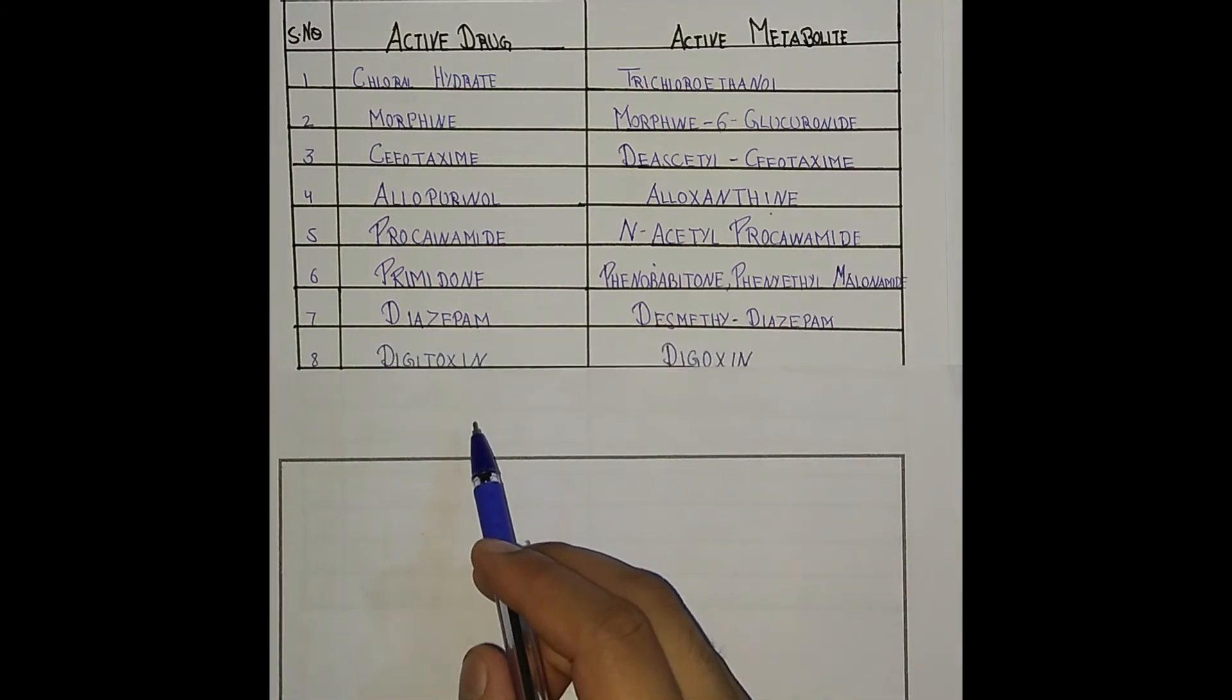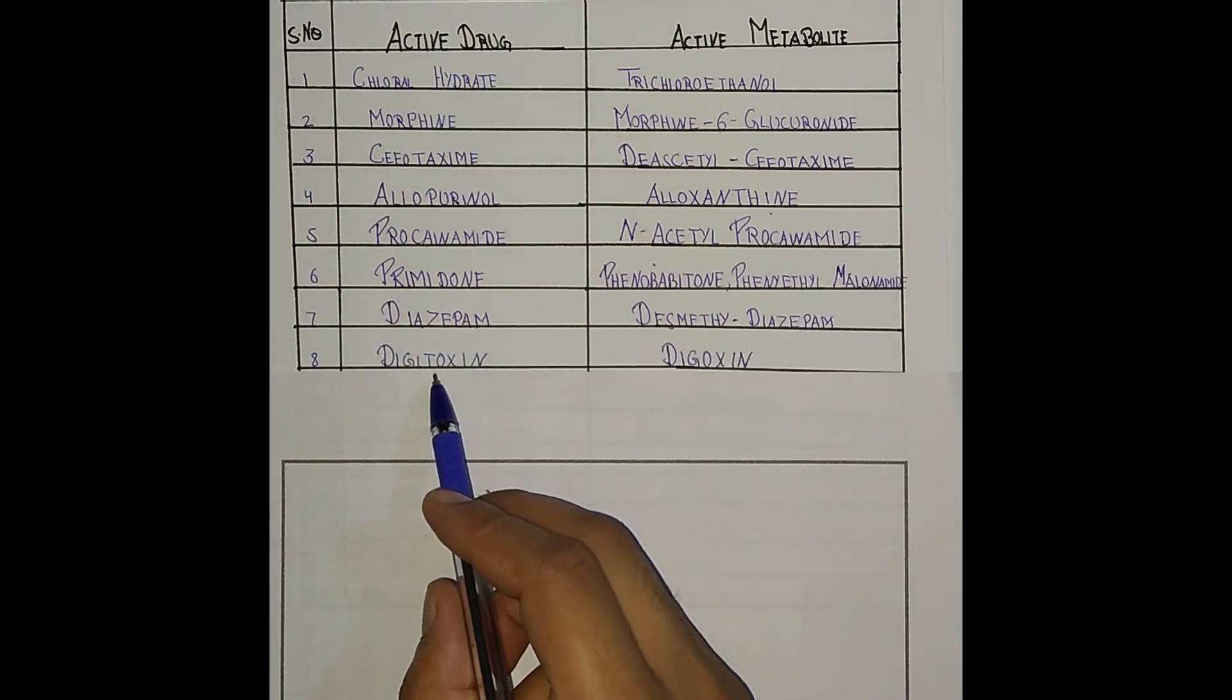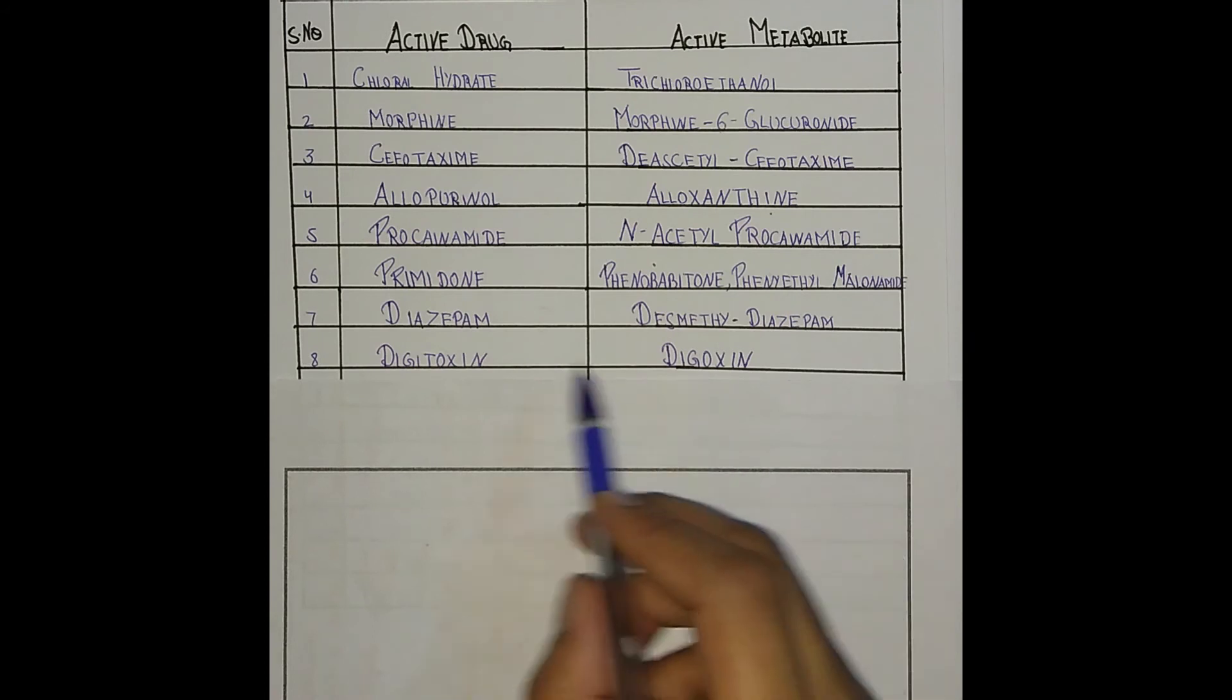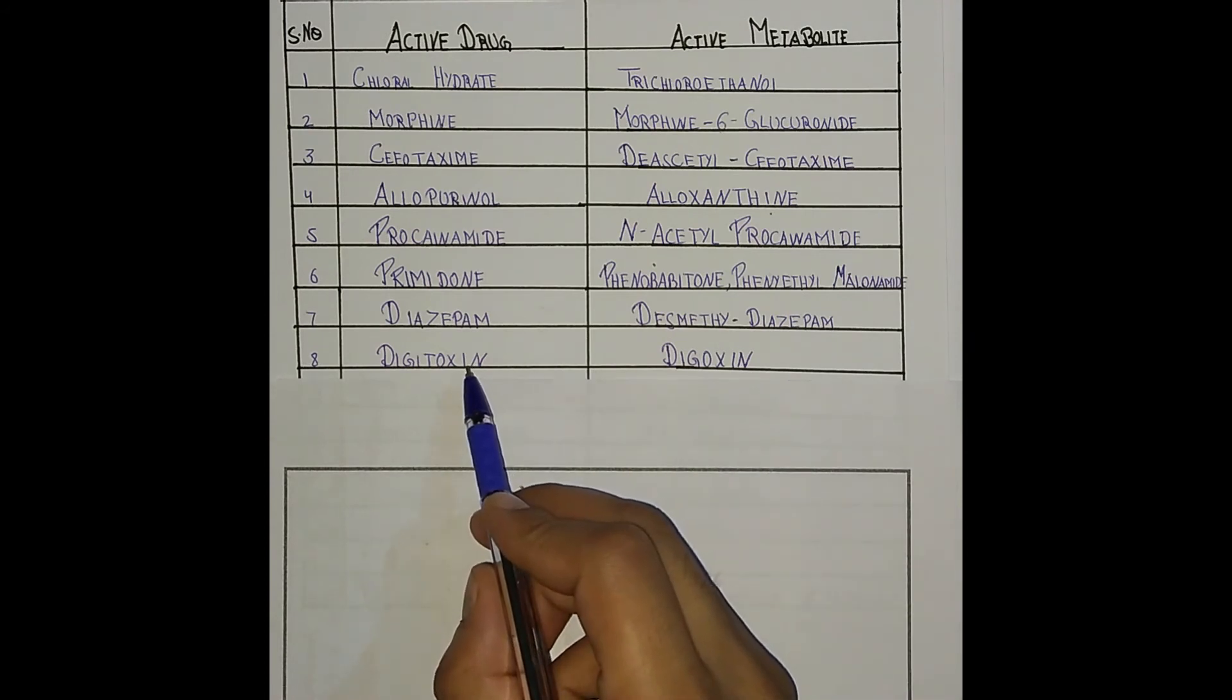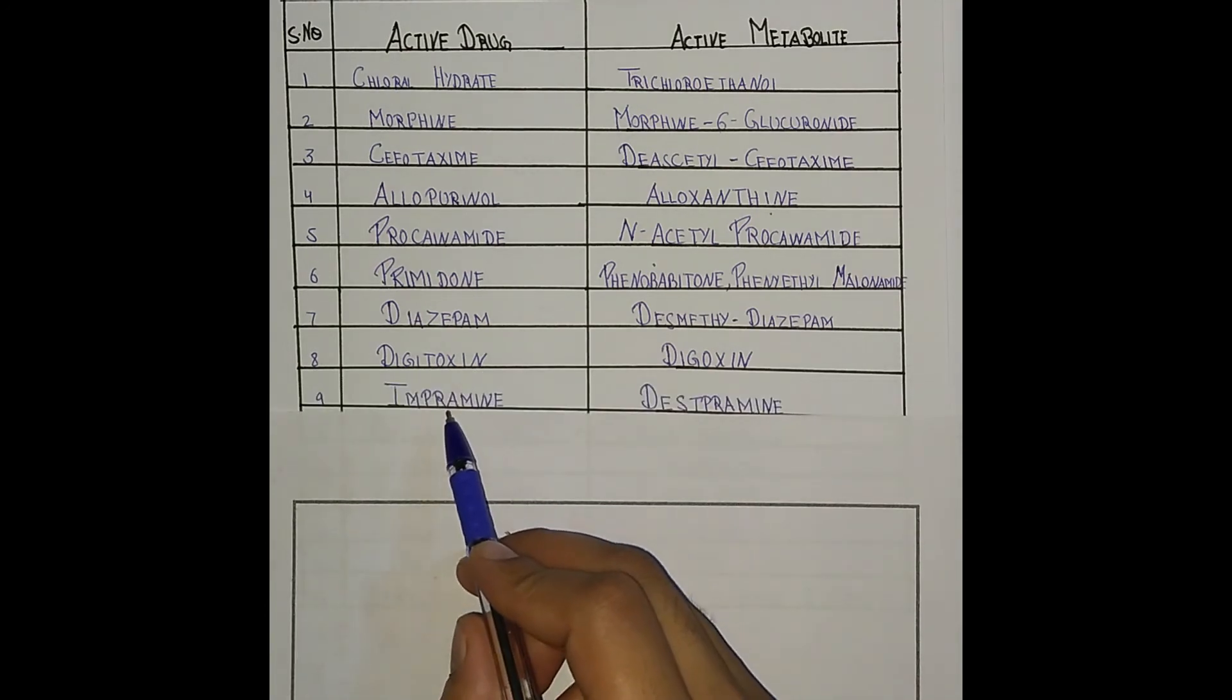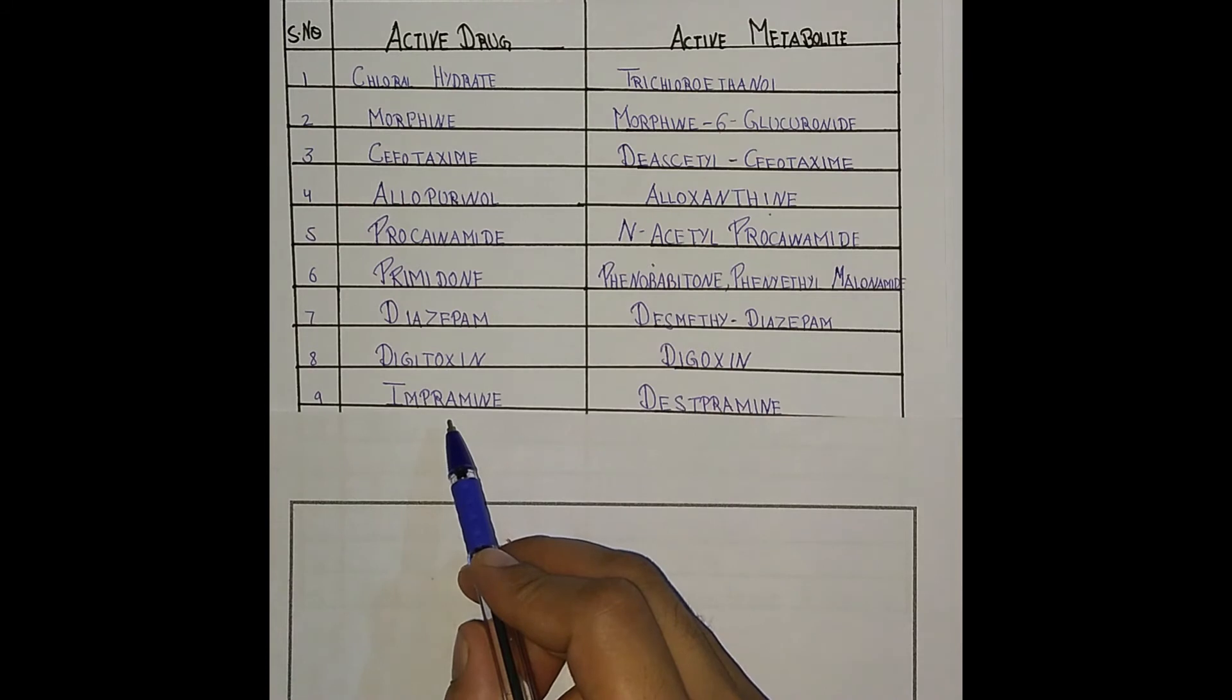Next one is digitoxin. Digitoxin has an active metabolite digoxin. It is a cardiac glycoside which acts on sodium-hydrogen ATPase pump, students. Now next one is imipramine. It is a tricyclic antidepressant.